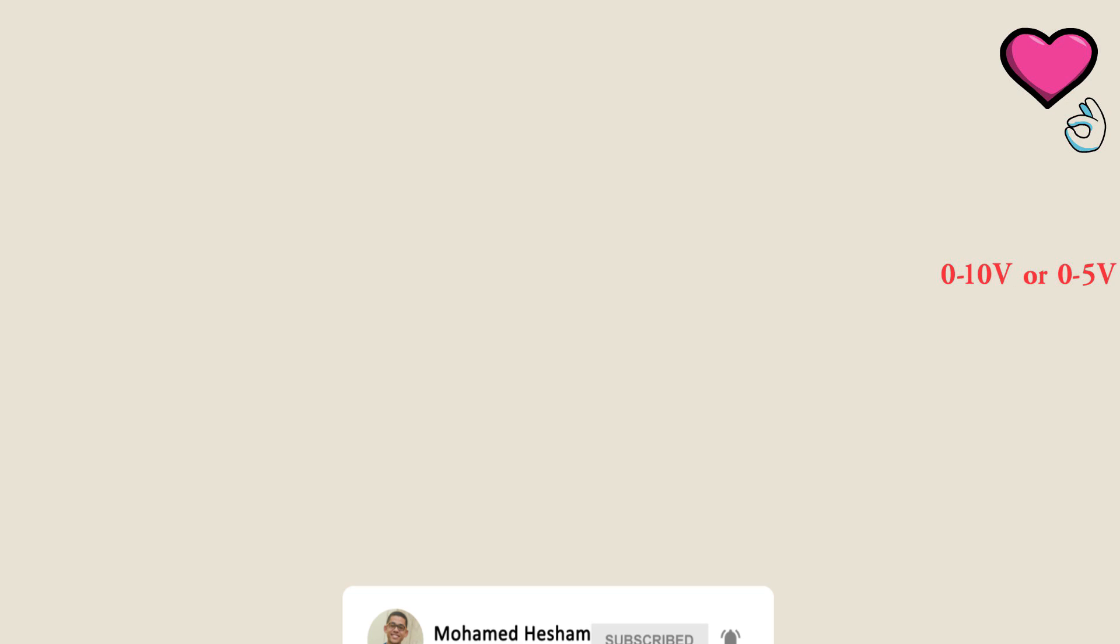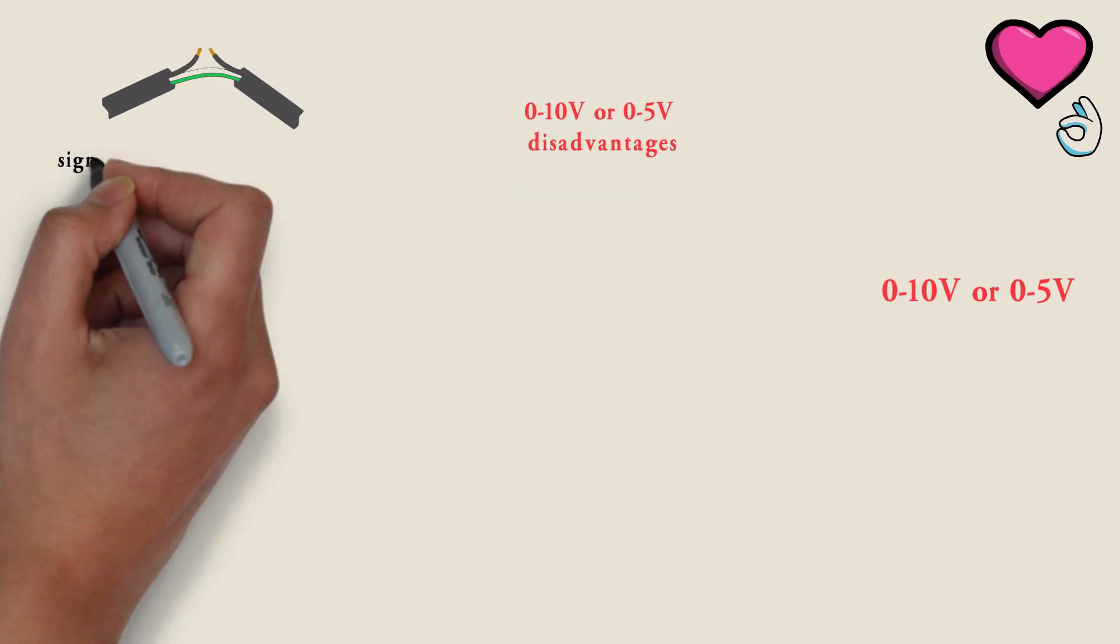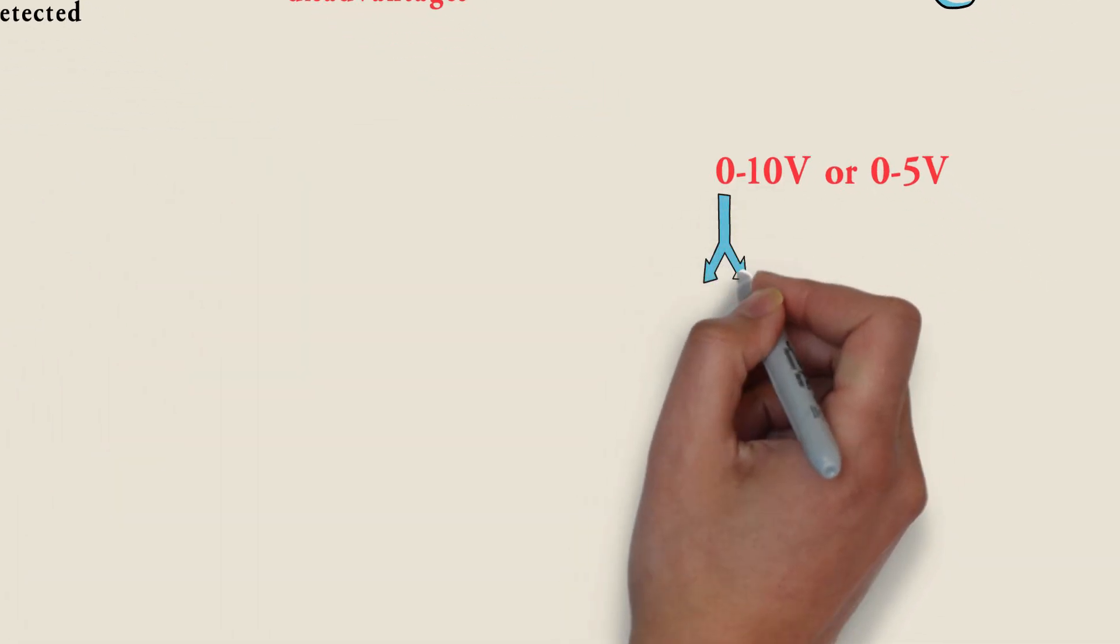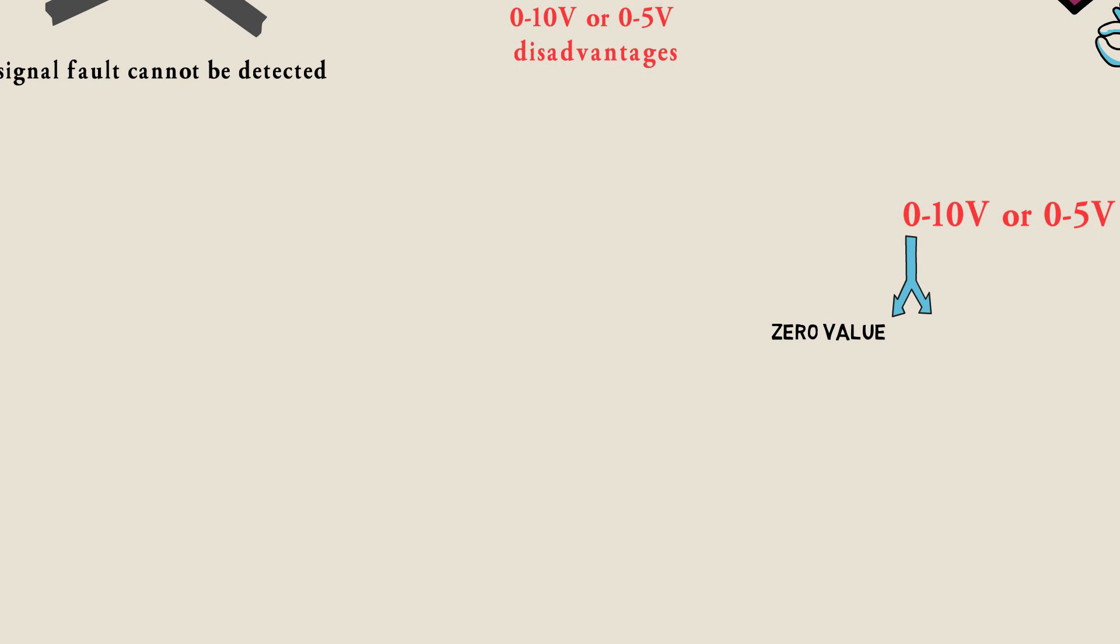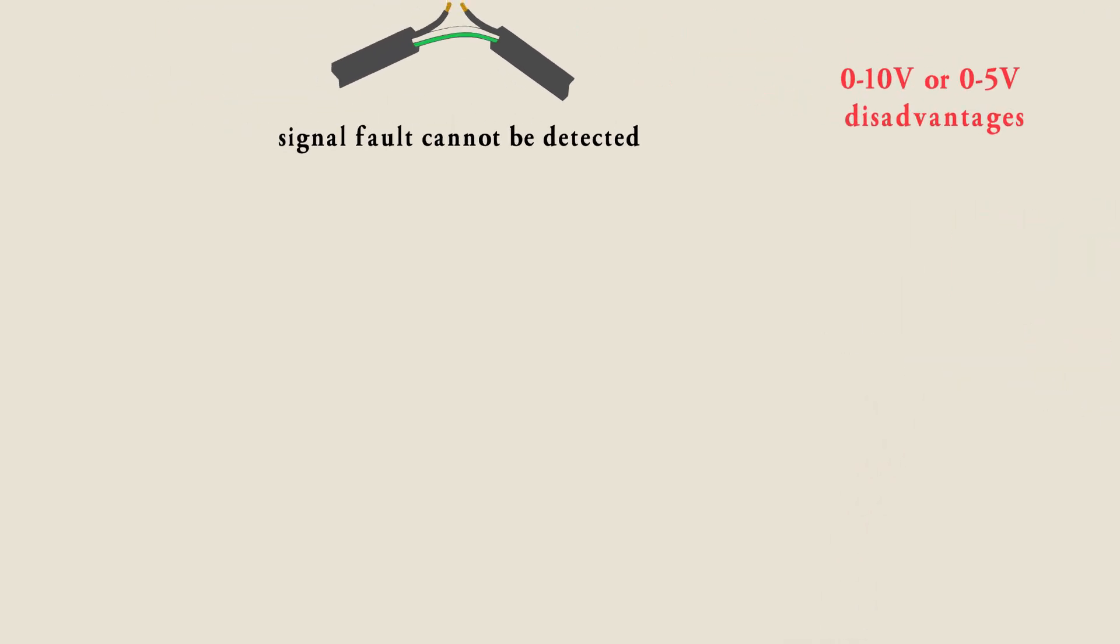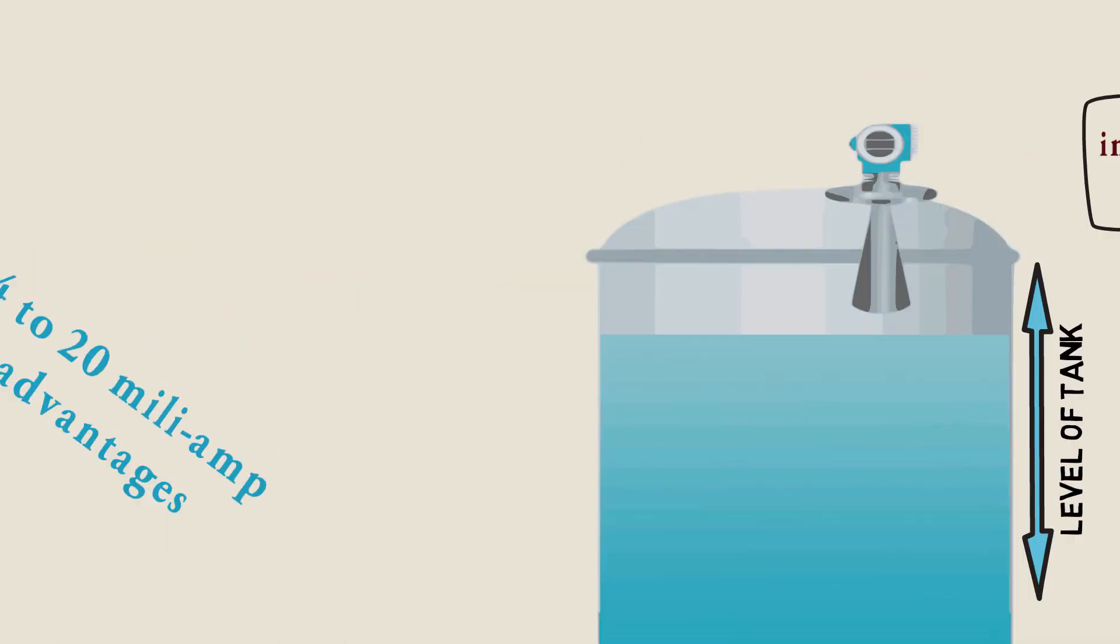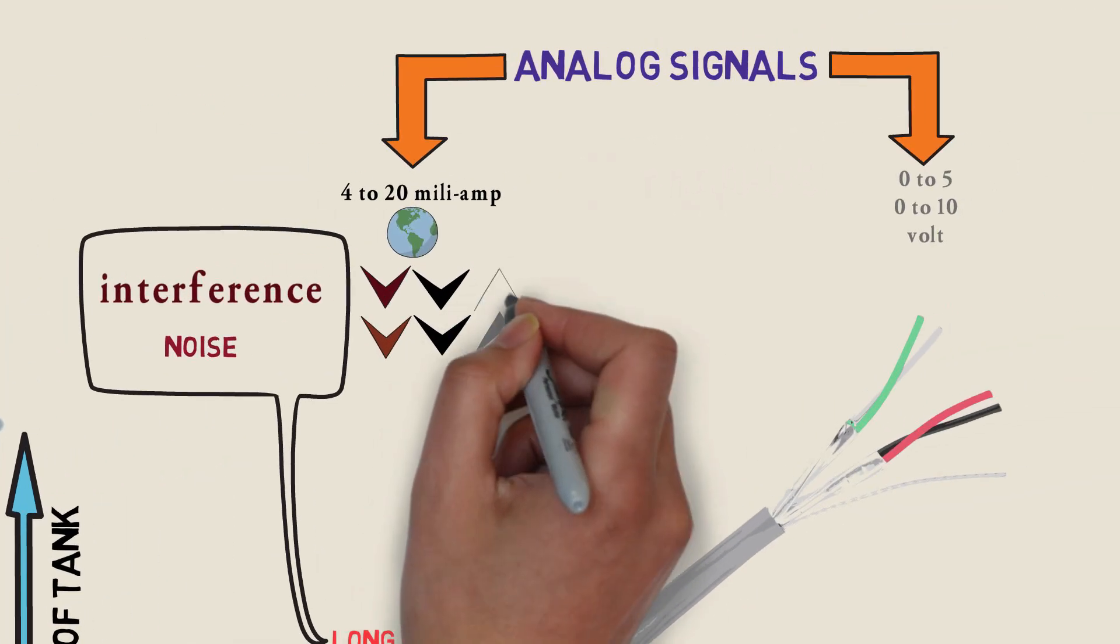A 0 to 10 volt or 0 to 5 volt analog signal has some disadvantages, including: a sensor signal fault cannot be detected. A value of 0 volt can indicate either 0 value or no signal. Over longer cable distances, voltage drop can cause an inaccurate signal. And it's prone to electrical noise and interference.